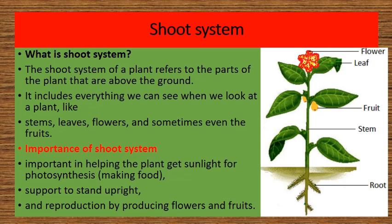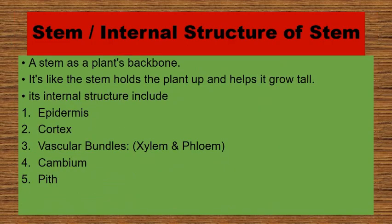Importance of the shoot system: It is important in helping the plant get sunlight for photosynthesis and making food. It provides support to stand upright, and it aids reproduction by producing flowers and fruits. Now I will explain about the stem and internal structure of the stem.